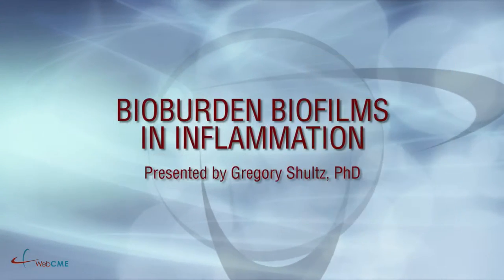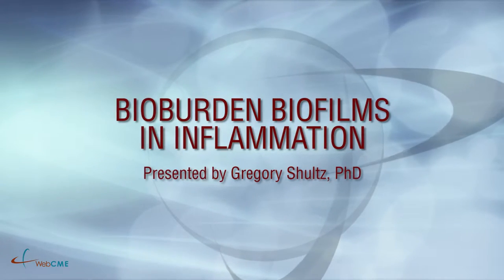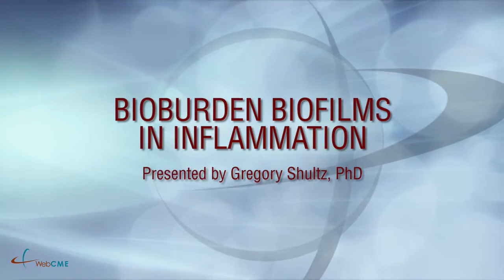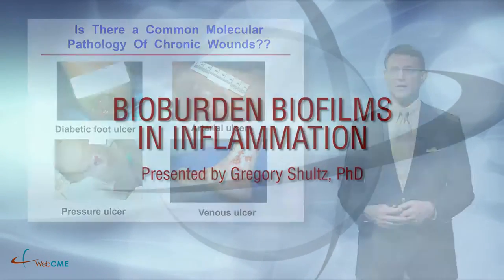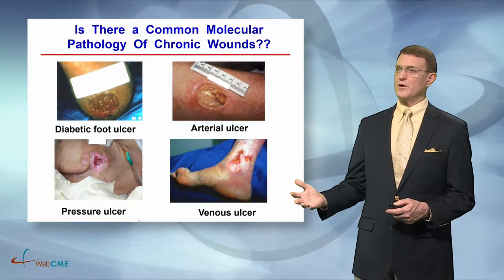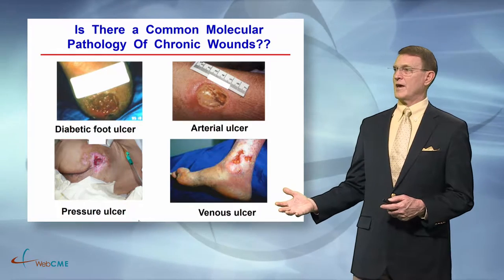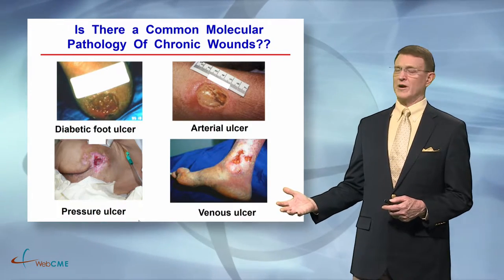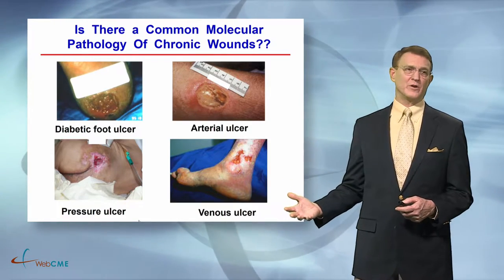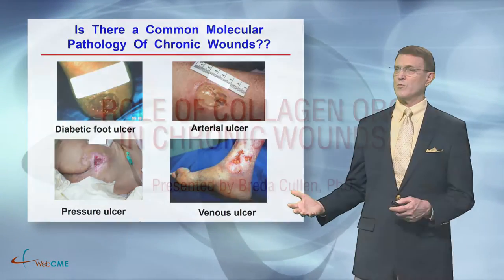Let's begin by asking: is there a common molecular pathology of chronic wounds? These four examples of the major categories of chronic wounds all have different underlying comorbidities.